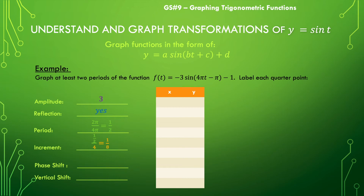Then we can find our phase shift by taking the negative version of c and dividing it by b. So negative negative pi over 4pi gives us a phase shift of one-fourth of a unit to the right. And in this case we do have a vertical shift — a vertical shift of negative 1.